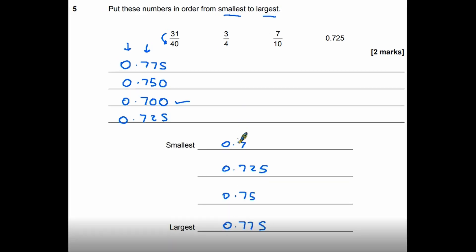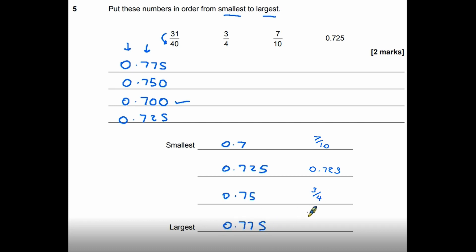Now we need to give the answer using the original numbers. So 0.7 was 7 tenths; 0.725 was the decimal we already had; 0.75 was three quarters; and 0.775 is 31 over 40. So we give the examiner the original numbers in order from smallest to largest.